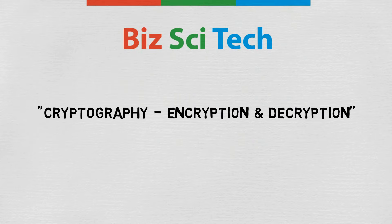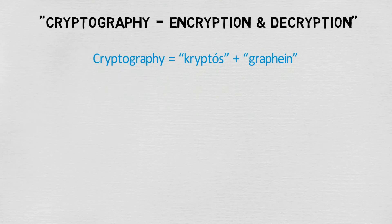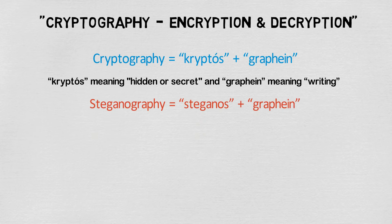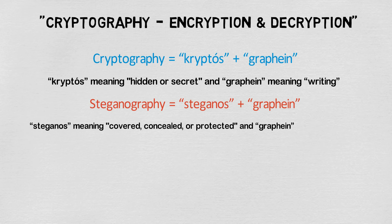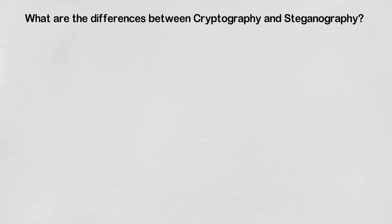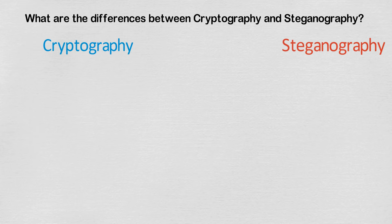Cryptography is the study of secure communication. It comes from the Greek words 'cryptos' meaning hidden or secret, and 'graphene' meaning writing. A related concept is steganography, which combines the Greek words 'steganos' meaning covered, concealed, or protected, and 'graphene' meaning writing. Both are techniques used for secure communication.